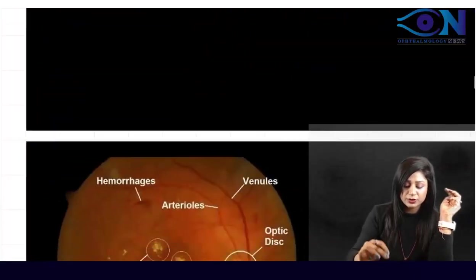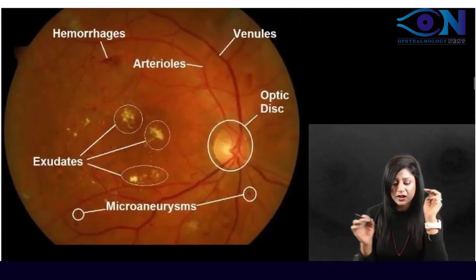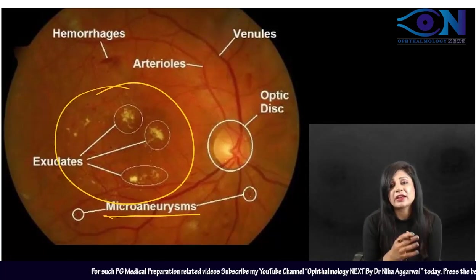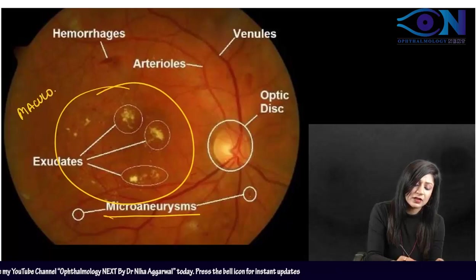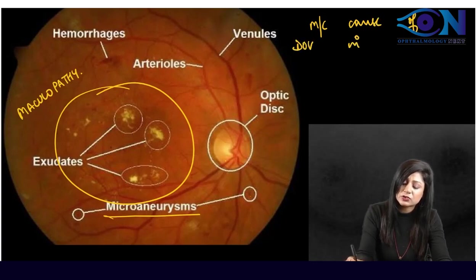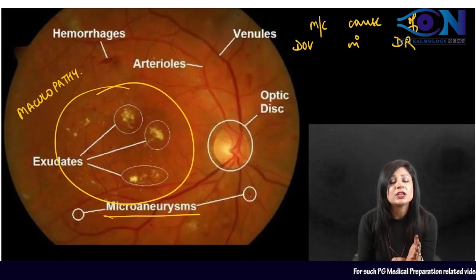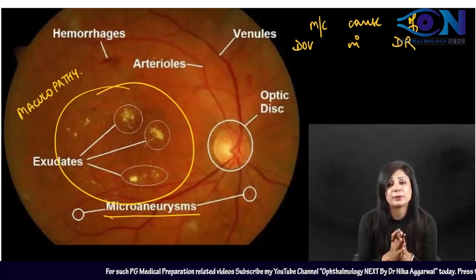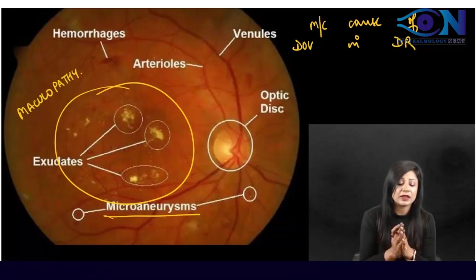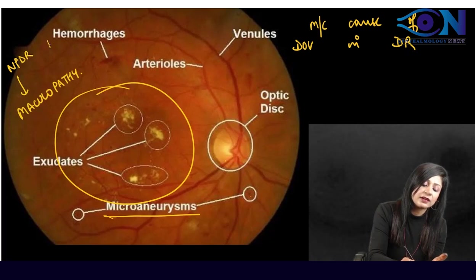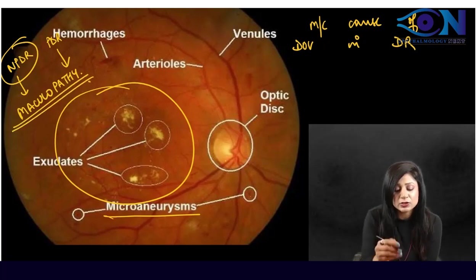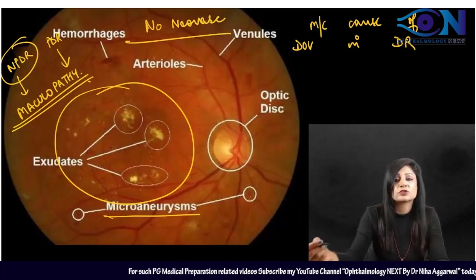In this marked fundus image, you can see microaneurysms, the optic disc, and extensive exudates in the macular area — this is maculopathy. Maculopathy is the most common cause of diminution of vision in diabetic retinopathy patients. Importantly, maculopathy can occur after NPDR as well as PDR. Here there is no proliferation or neovascularization, so this is NPDR leading to macular involvement.